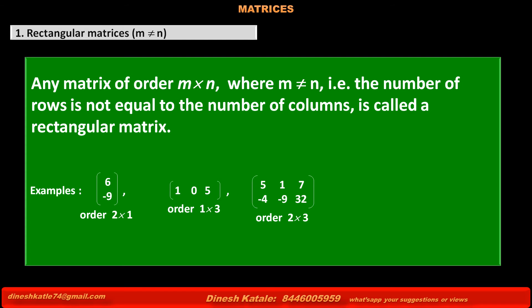See the third matrix — it has 2 rows and 3 columns, so again the number of rows is not equal to the number of columns, making it a rectangular matrix. The last matrix contains 3 rows and 2 columns, meaning the number of rows is not equal to the number of columns, so it is also a rectangular matrix.